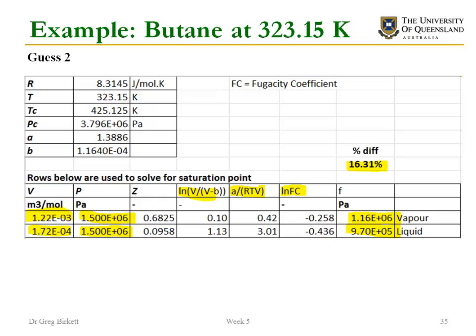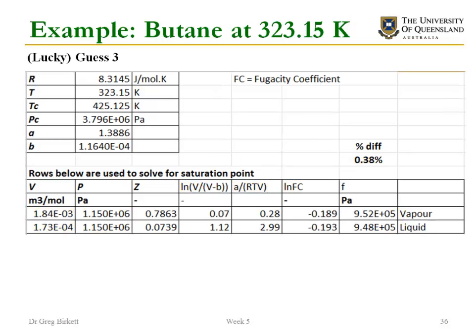So I'm just going to revise my guess, it's in between these two and so I'm going to guess a slightly lower pressure. So now I guess 1.15 megapascals, solve for my volumes again, and then go through and calculate each of the parts, including Z which I forgot last time.